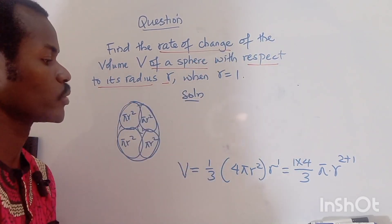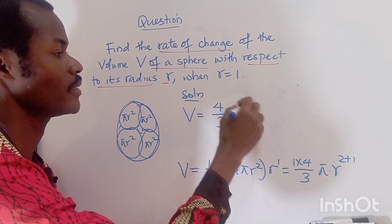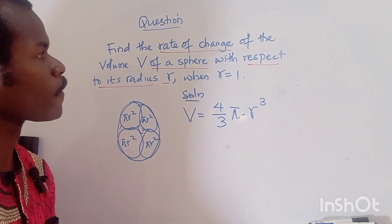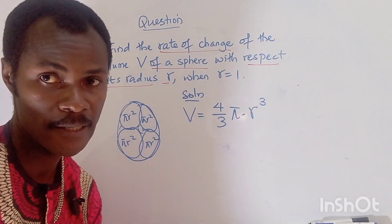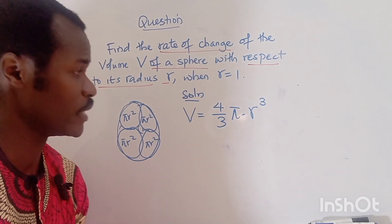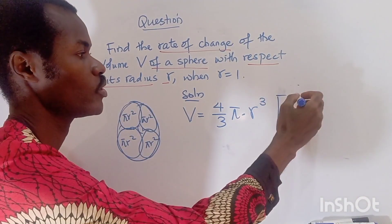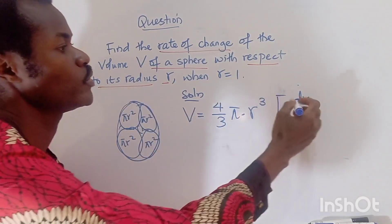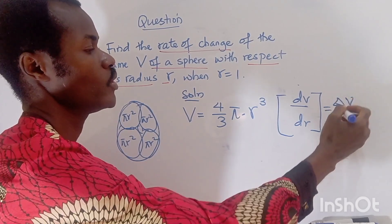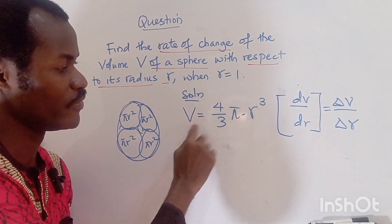So the volume of the sphere with respect to r is (4/3)πr³. Now, to find the rate of change, whenever you come across rate of change they are telling you to find dV/dr — the rate of change of volume with respect to radius r.